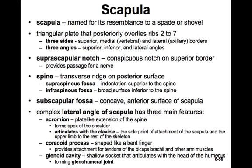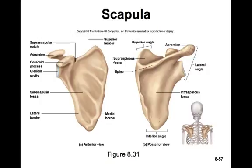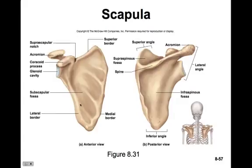We'll also notice a spine — a transverse ridge on the posterior surface. Above the spine is a supraspinous fossa, and below the spine is an infraspinous fossa. Remember, a fossa is a large flat area. When we flip the scapula over and look at the anterior view, we have the subscapular fossa.